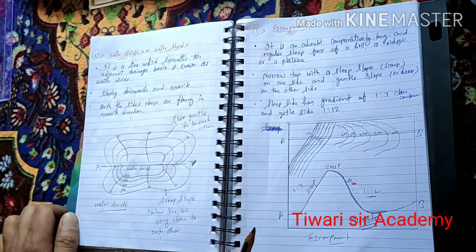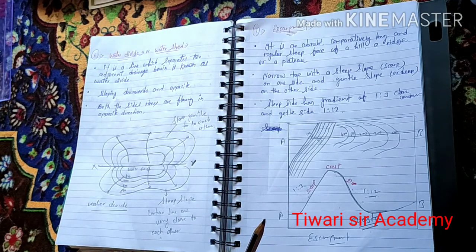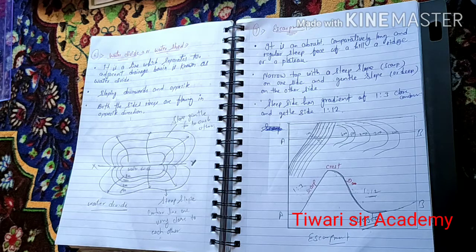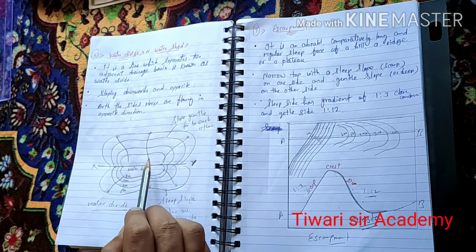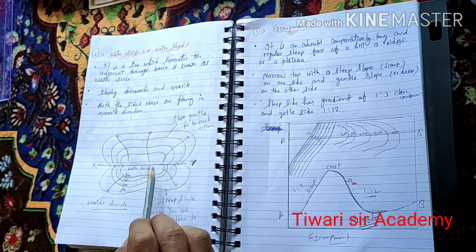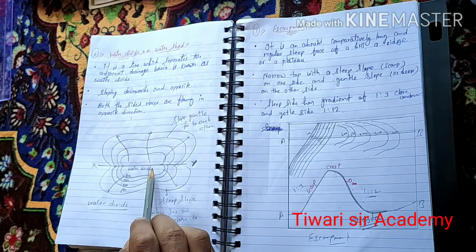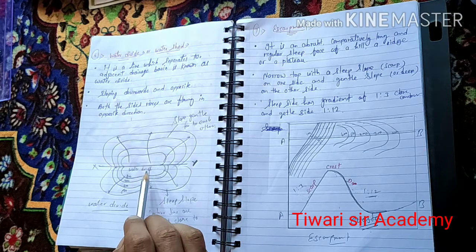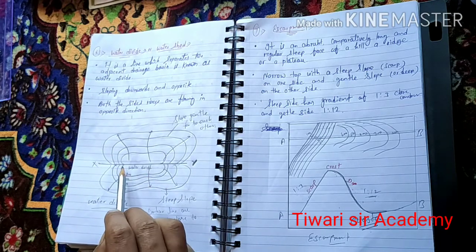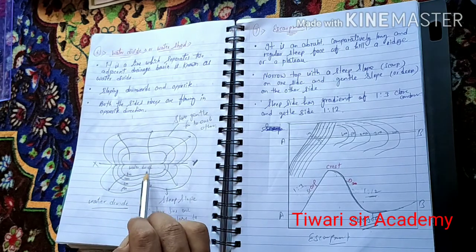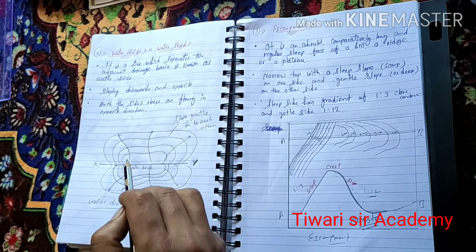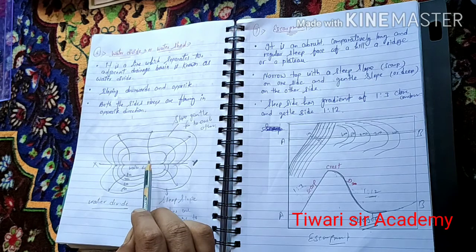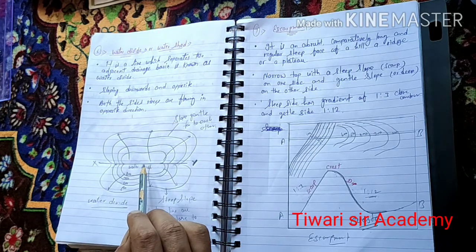The next landform is water divide, also called watershed. It is a line which separates two adjacent drainage basins. The slope is downwards on opposite sides and both rivers flow in opposite directions. The contour diagram of a watershed is very similar to the ridge, with contour lines very close to each other, sloping downwards in opposite directions.